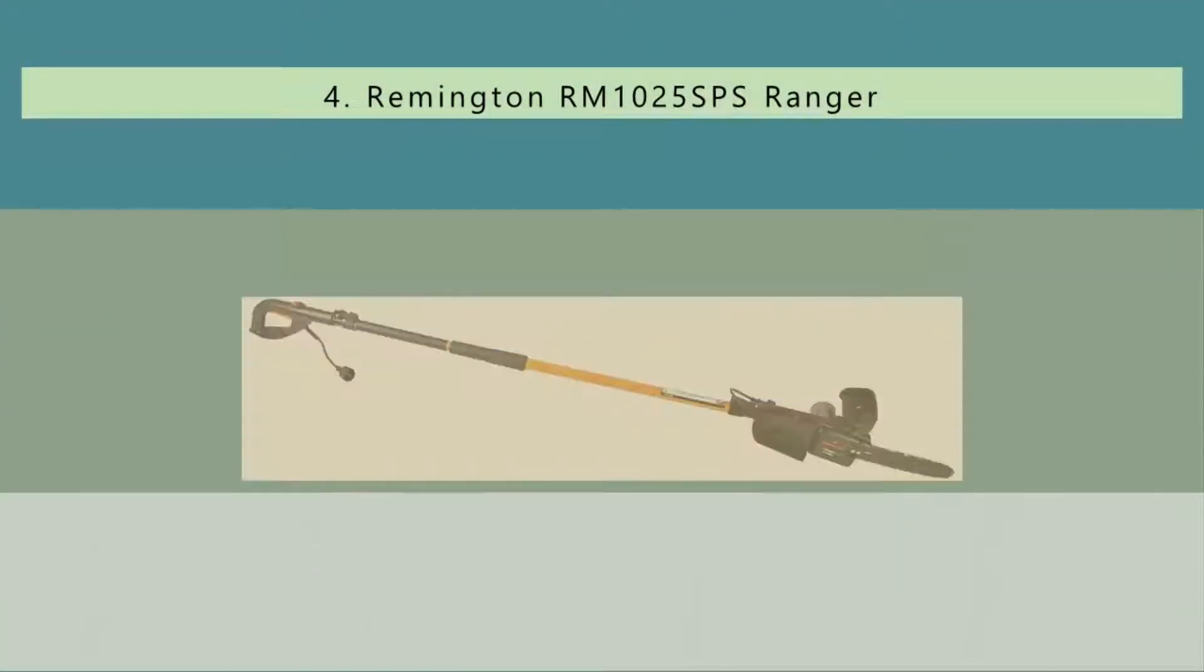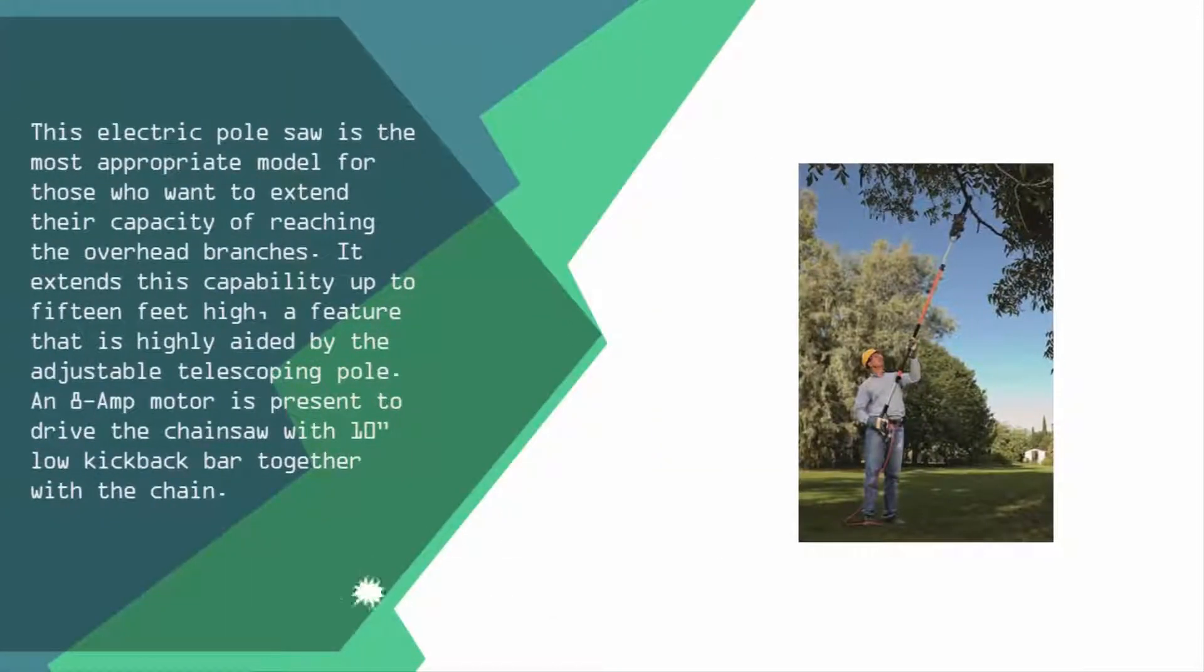At number four, this electric pole saw is the most appropriate model for those who want to extend their capacity of reaching the overhead branches. It extends this capability up to 15 feet high, a feature that is highly aided by the adjustable telescoping pole. An 8-amp motor is present to drive the chainsaw with a 10-inch low-kickback bar together with the chain.